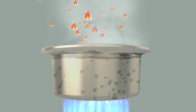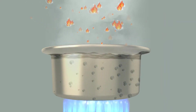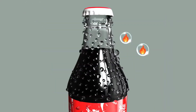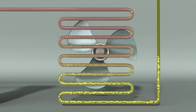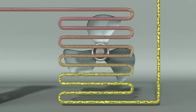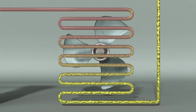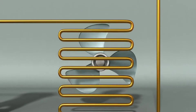The refrigerant compressed by the compressor flows to a condenser. While evaporation is the transition of liquid to gas through heat absorption, condensation is the transition of gas to liquid when it loses heat. A condenser serves to turn refrigerant in a hot gas state into liquid form by taking away its heat.